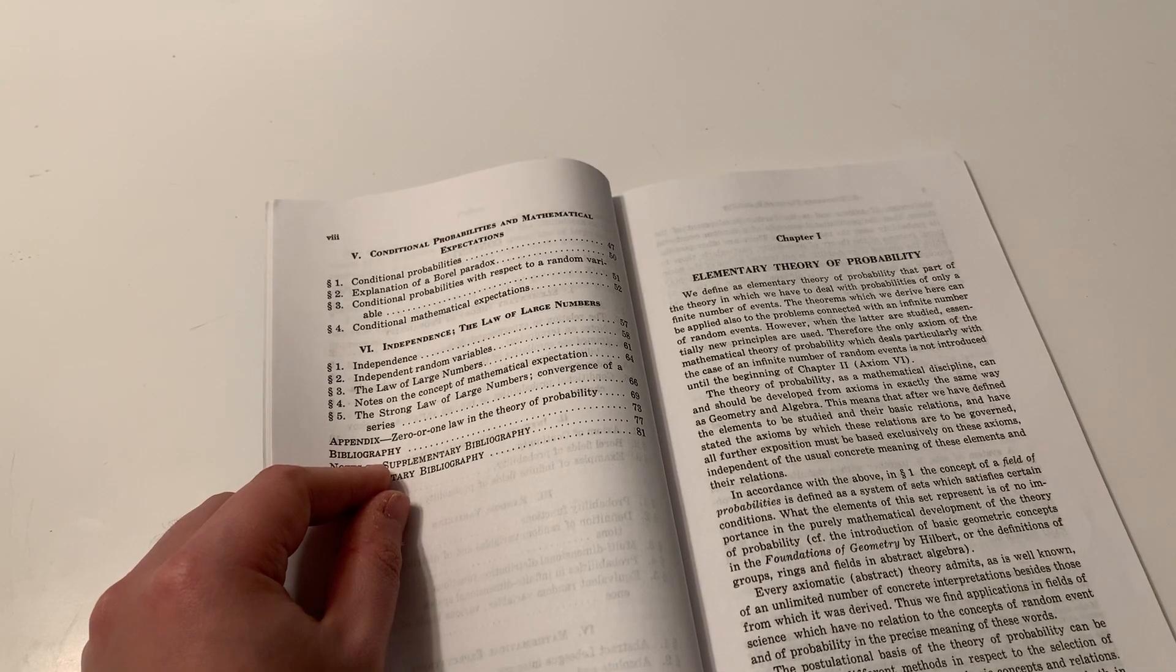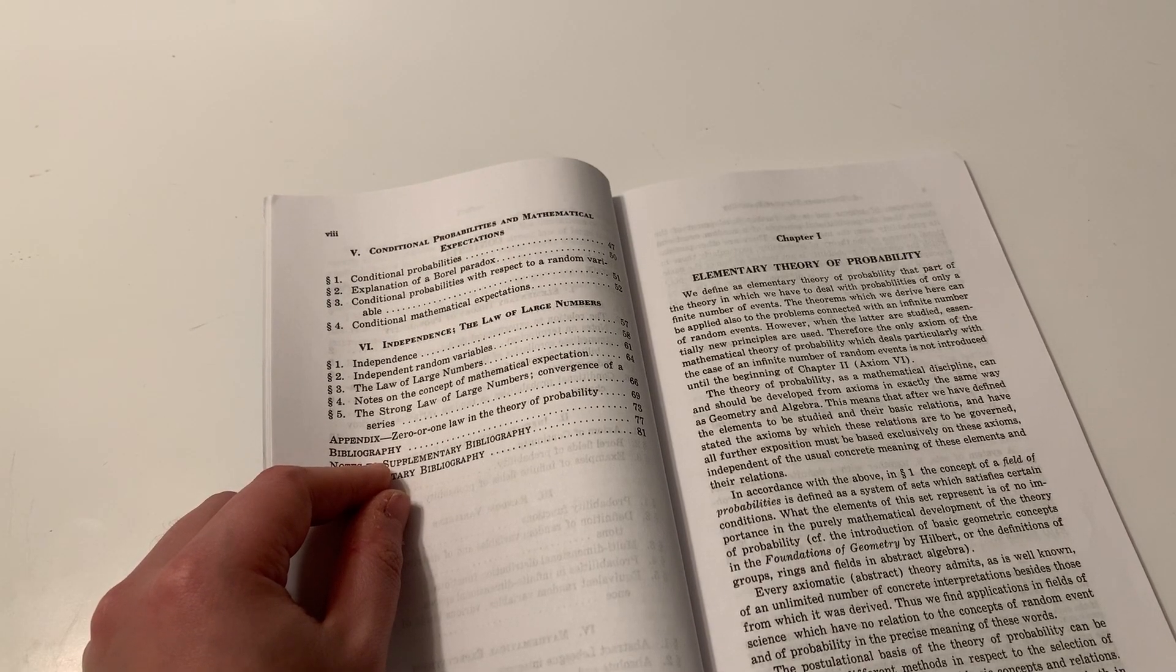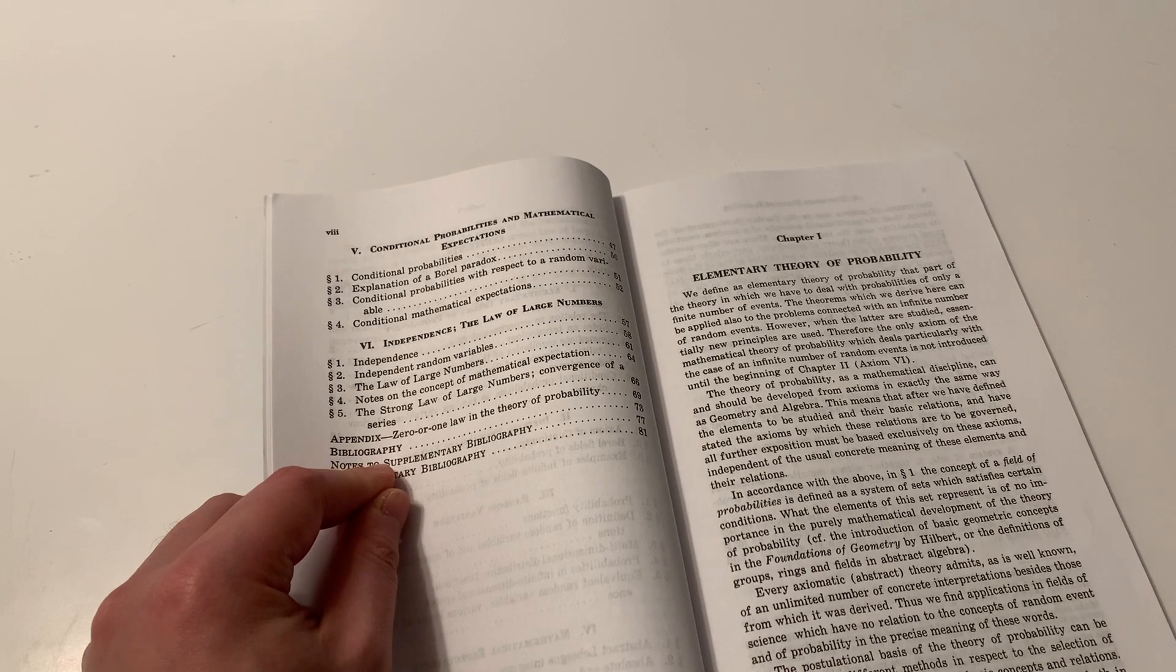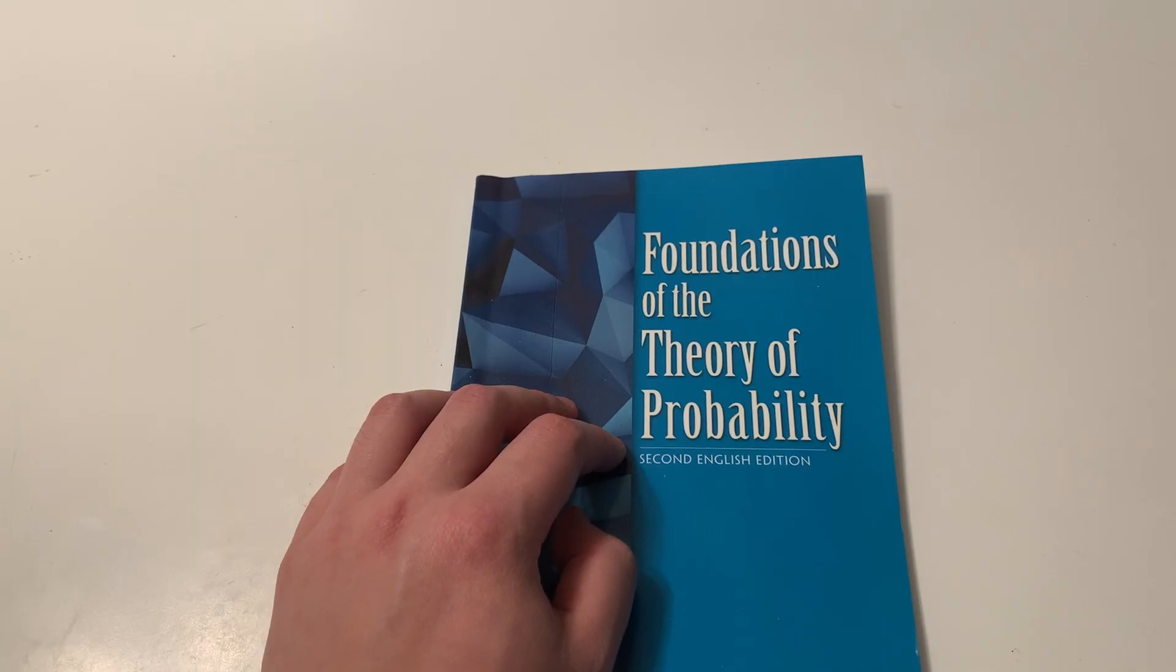The intended audience of this book were professional mathematicians who have advanced backgrounds in real analysis. Nowadays, axiomatic probability theory is usually taught in senior undergraduate or beginning graduate years.